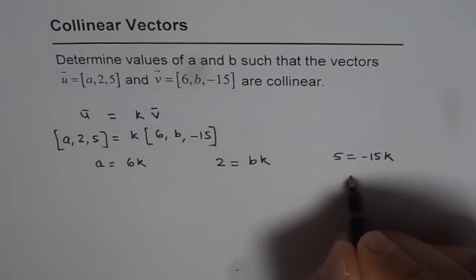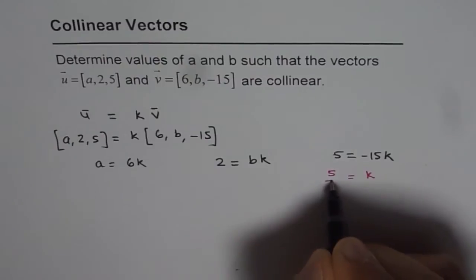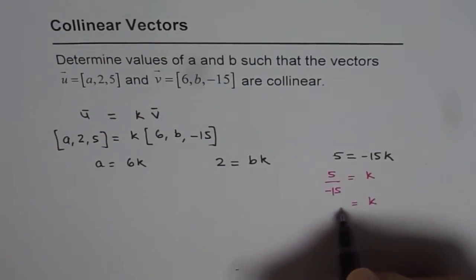So from here we can say k equals 5 over -15, or we get k equals -1/3. So we get the value of k.